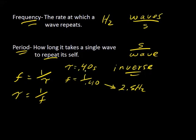You might ask where the unit Hertz comes from. Remember, Hertz is really 1 over seconds. Since we computed 1 over 0.40 seconds, that gives us 1 over seconds, which is Hertz. That's how we figure out frequency when we know the period of the wave.